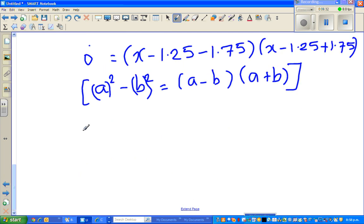So this is x minus 1.25 minus 1.75 and x minus 1.25 plus 1.75. So 0 is equal to x minus, minus 1.25 minus 1.75 is minus 3. And this would be minus 1.25 plus 1.75 is x plus 0.5.